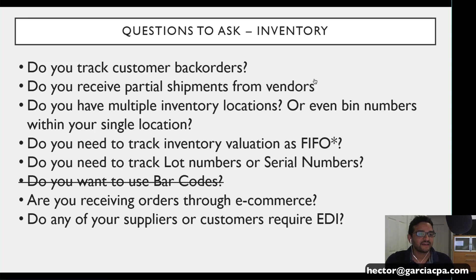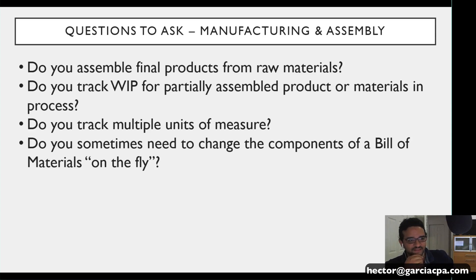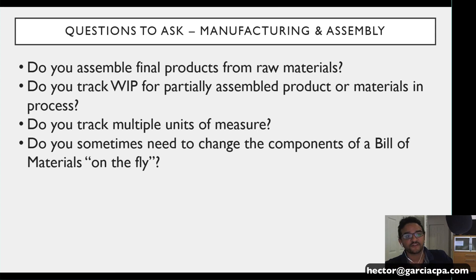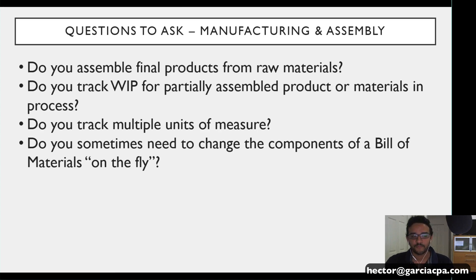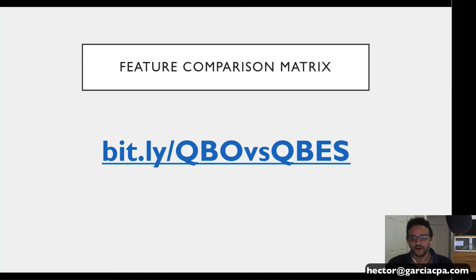For manufacturing and assembly businesses: do you assemble final products from raw materials? If yes, you need at least QuickBooks Premier, Accountant, or Enterprise. Do you track work-in-progress or work-in-process for partially assembled products? Again, at least Premier or Enterprise. Do you track multiple units of measure? If yes, Premier, Accountant, or Enterprise. Do you want to change components on the fly from your bill of materials — a customizable BOM for a specific assembly run? If yes, only QuickBooks Enterprise supports that feature.